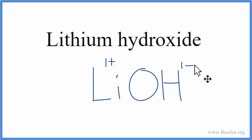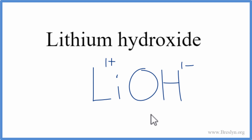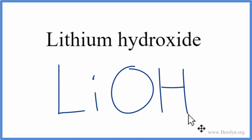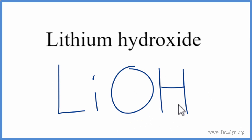Because we have a 1 plus and a 1 minus, that balances out. That gives us a net charge of zero, and this is the formula for lithium hydroxide. Let's remove the charges — LiOH. This is Dr. B, and thanks for watching.